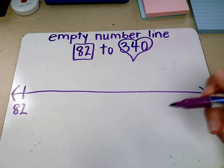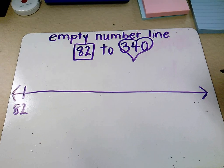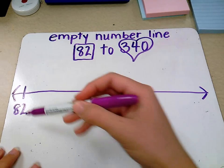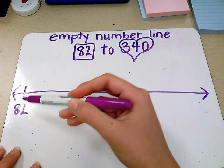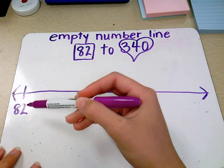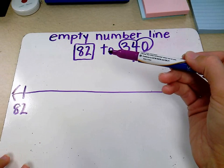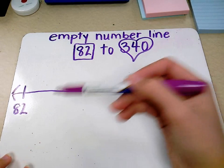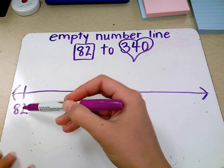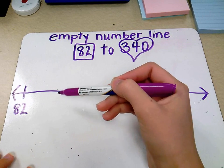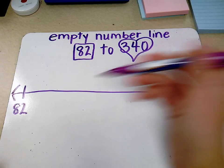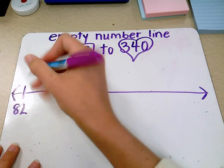The first step is to ask yourself, should I count by ones, tens, or hundreds? 82 is not a nice number to count on by tens or hundreds. So I tell the kids we need to get to a benchmark number and a benchmark number is the next 10. Getting from 82 to the next 10 would mean we'd want to use ones. The next 10 is 90. So let's count by ones.